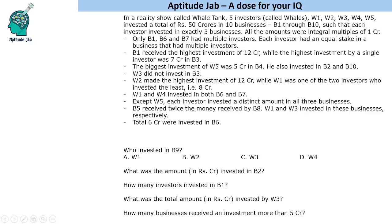Welcome to Aptitude Lab. This problem is about a show called Whale Tank in which there are five investors called whales who invested a total of 50 crores in 10 businesses (b1 through b10), such that each investor invested in exactly three businesses. So with 5 investors and 3 businesses each, there are a total of 15 investments. All amounts were integral multiples of one crore.